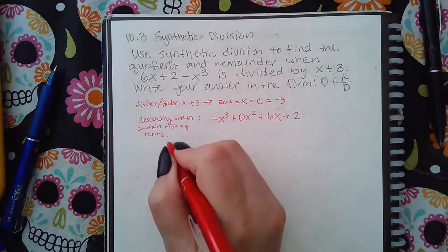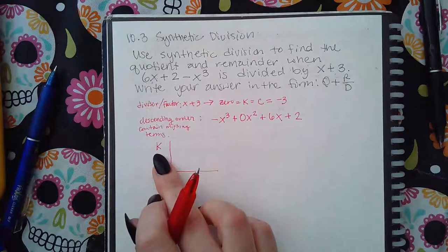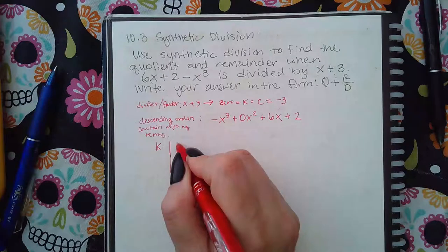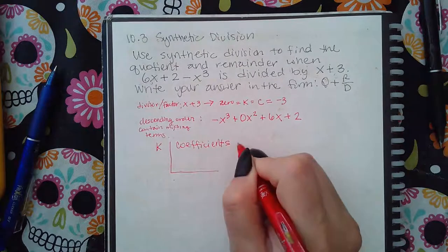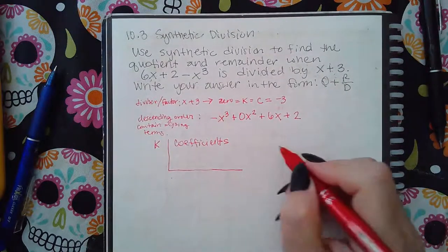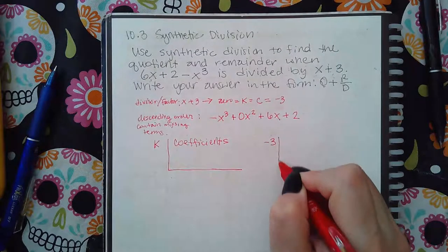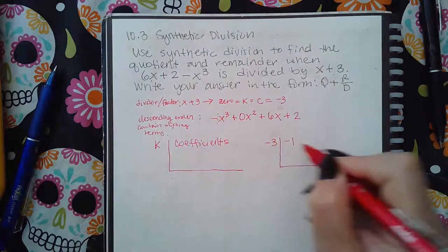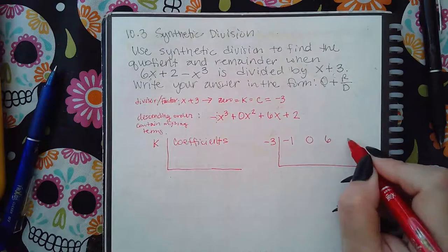So the first thing we need to do is we need to set it up so that you have your k or your c, whatever you call it there, the zero, and then you have the coefficients of your polynomial there. So for my particular problem, my k value is negative 3, and then my coefficients are a negative 1, a 0 for the missing x squared, a positive 6 and a positive 2.